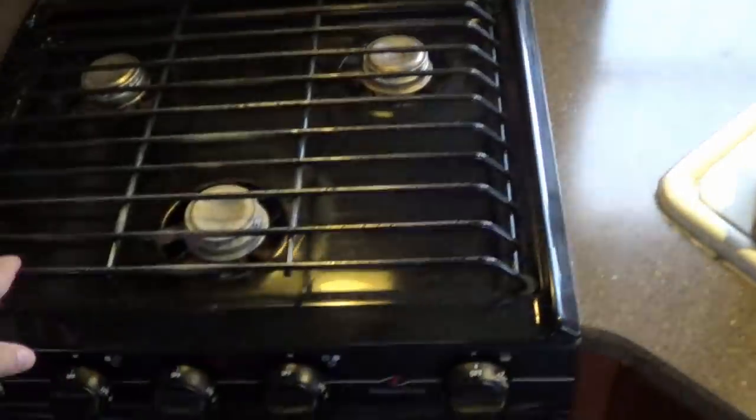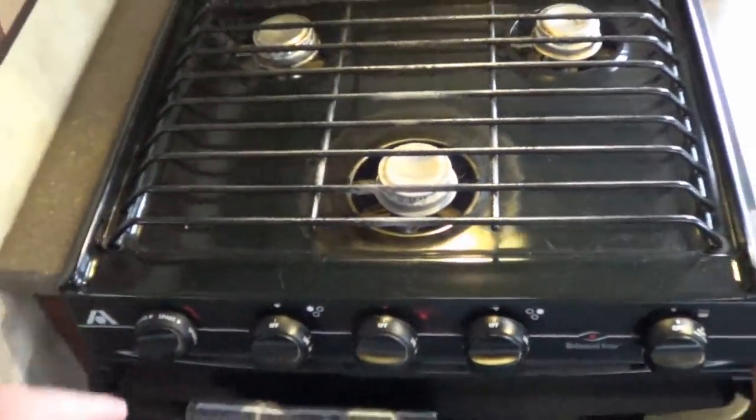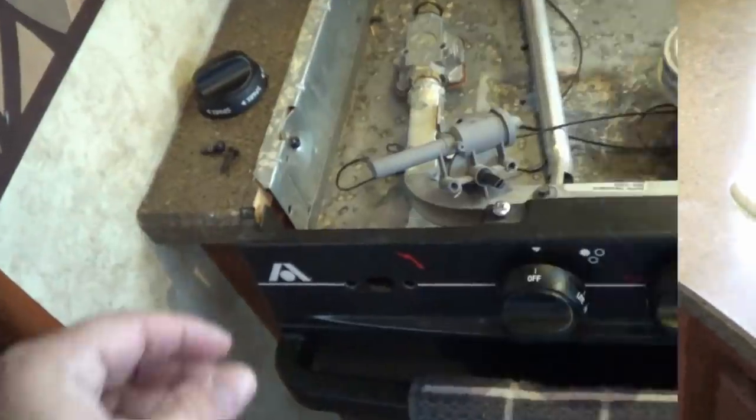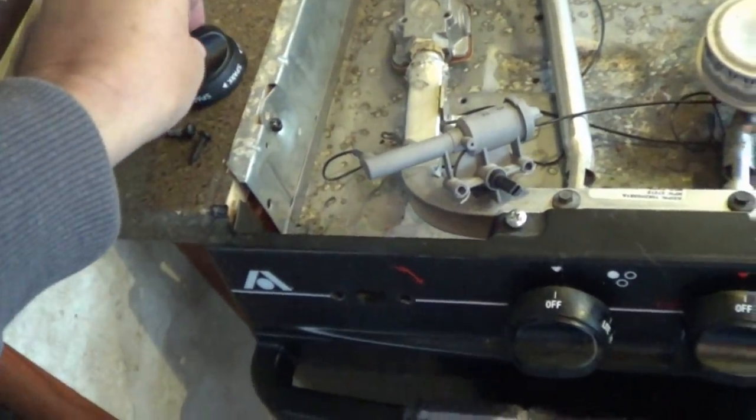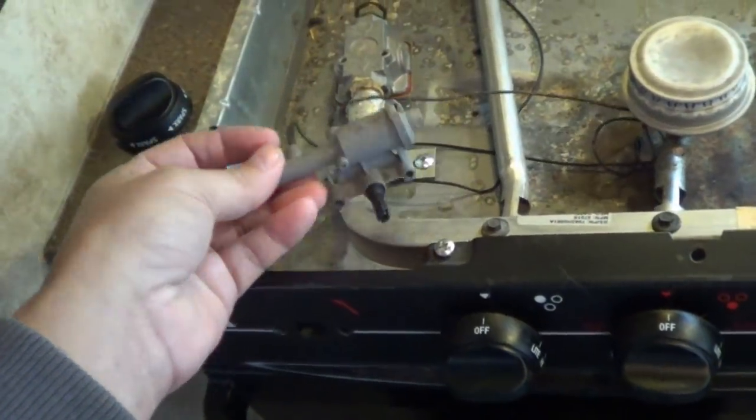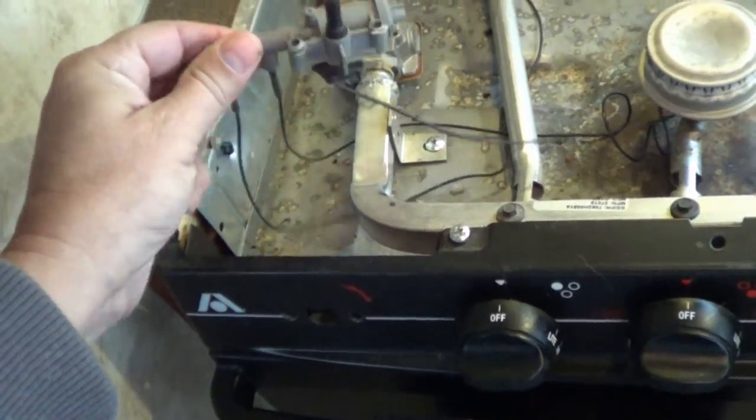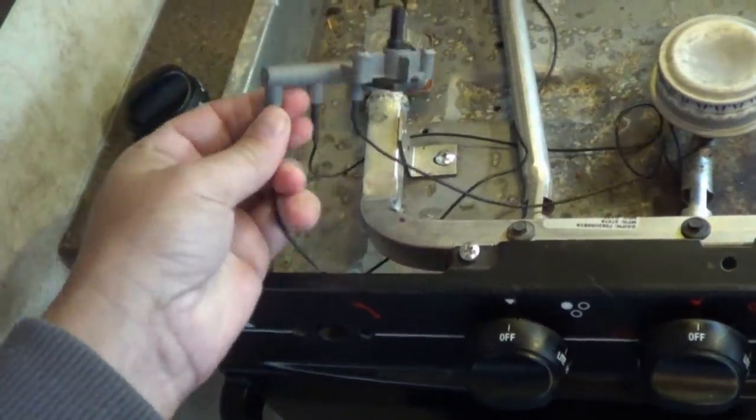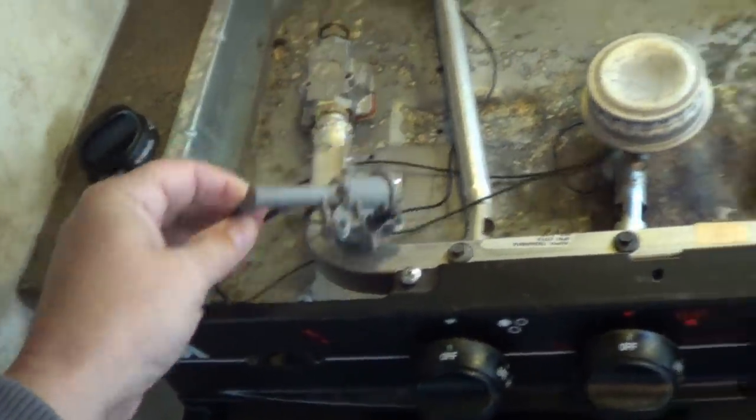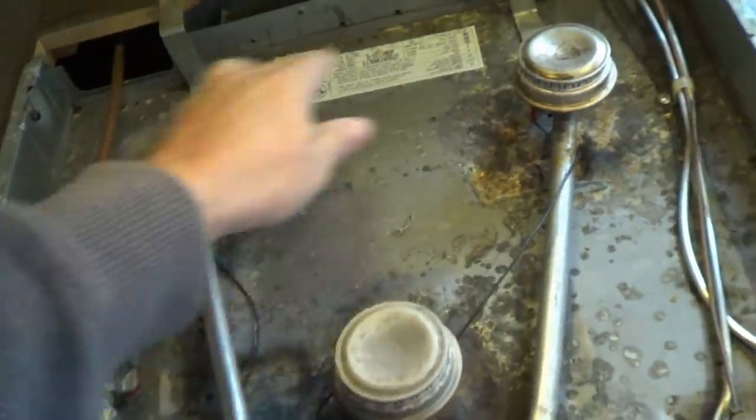So let's just pull the top off this stove and I'll show you what I'm going to do. Okay, a couple screws, pull the knob off and then the sparker assembly comes off and you can see there's some detachable wires there that lead to each of the elements.